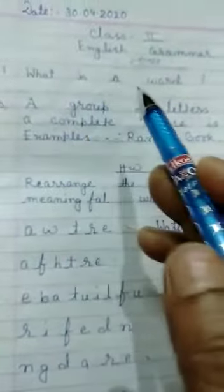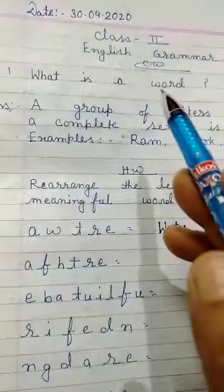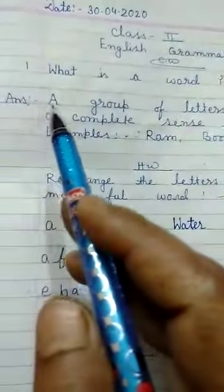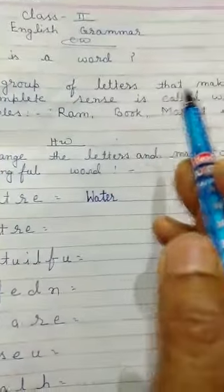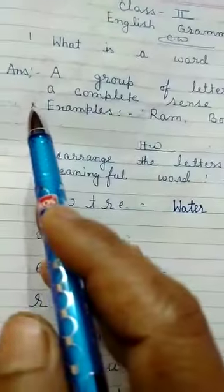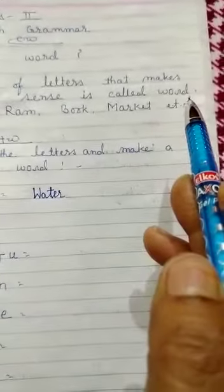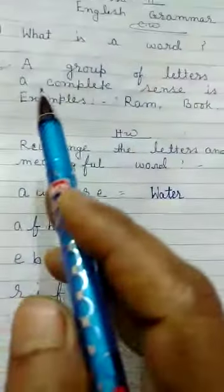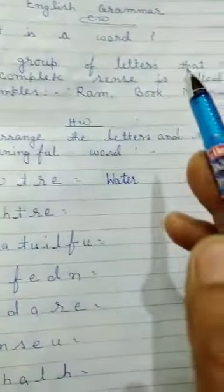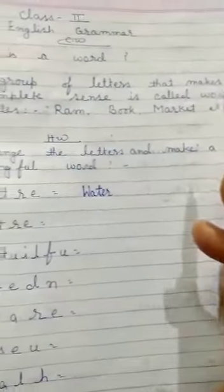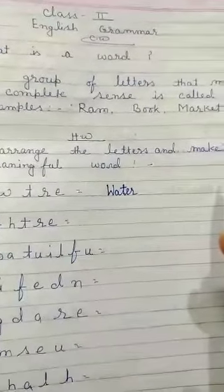What is a word? Yaani sabd. Sabd kya hai? Answer: A group of letters that makes a complete sense is called a word. Group of letters, yaani verno ka samu, jis ka koi arth nikalta hai, usse hum loog word kaatay hai.